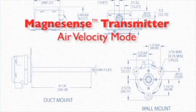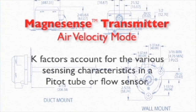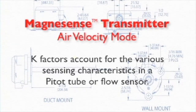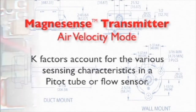When using various pitot tubes and flow sensors in this application, these sensors have various k-factors. These k-factors account for the various sensing characteristics of the flow sensor that may amplify or negate the actual velocity pressure being sensed. The Magnesense transmitter can account for these various k-factors.